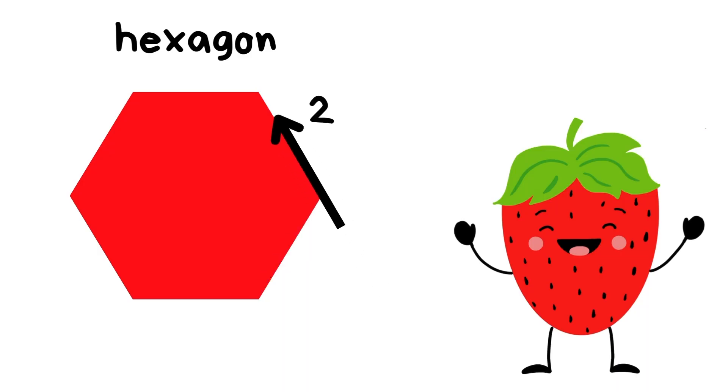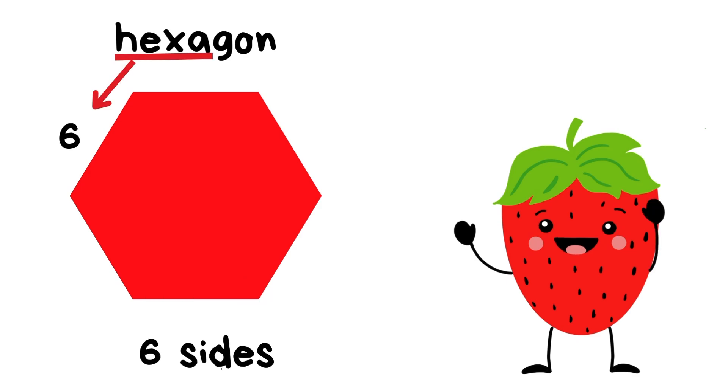Let's count how many straight sides a hexagon has. One, two, three, four, five, six. A hexagon has six sides and this is why it's called a hexagon because hexa means six.